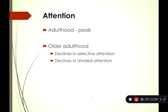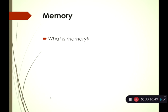In older adulthood, we start to see some declines. There are declines in selective attention — the ability to really focus and ignore distractions. You also start to see declines in divided attention — to the point where you might need to focus solely on washing dishes without having the TV on, otherwise you might make mistakes.